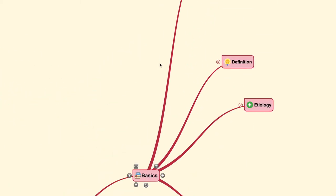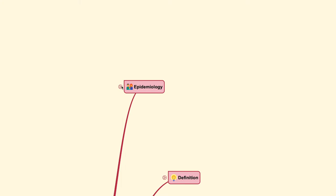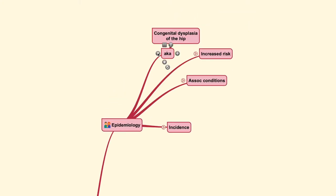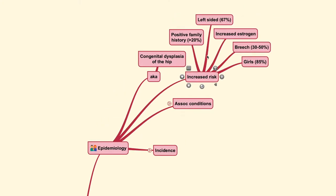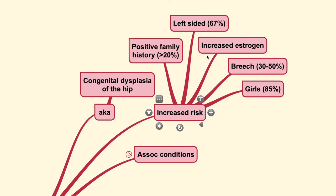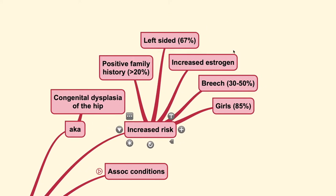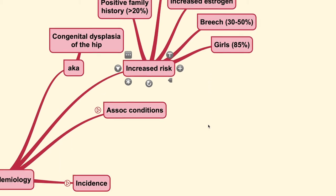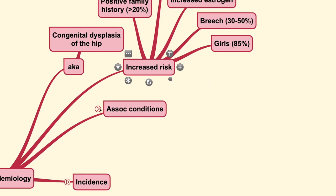Let us start with the basics. DDH is usually also known as congenital dysplasia of the hip. There are certain types of patients that have an increased risk of having this condition, which includes positive family history, left-sided presentation, increased estrogen, breech positioning of the baby intrauterine, and girls are usually at higher risk of developing DDH.